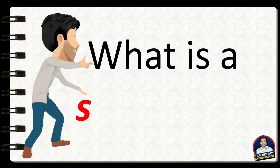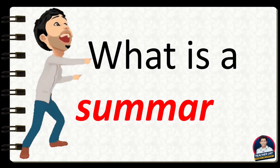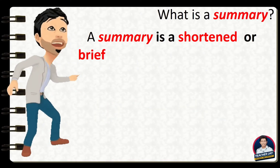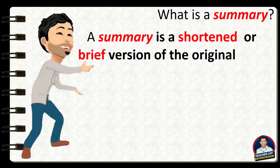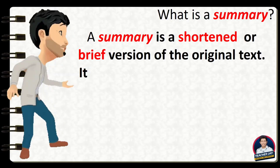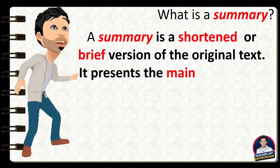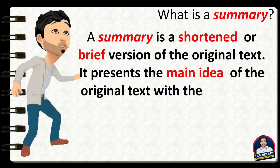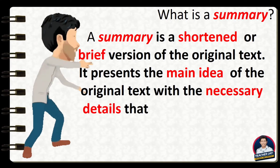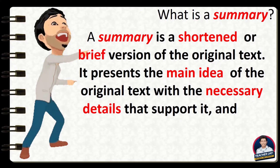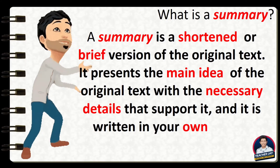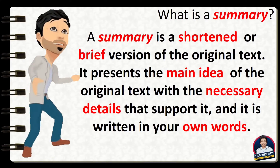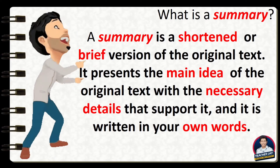What is a summary? A summary is a shortened or brief version of the original text. It presents the main idea of the original text with the necessary details that support it, and it is written in your own words.